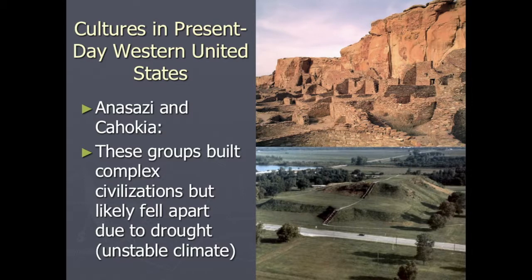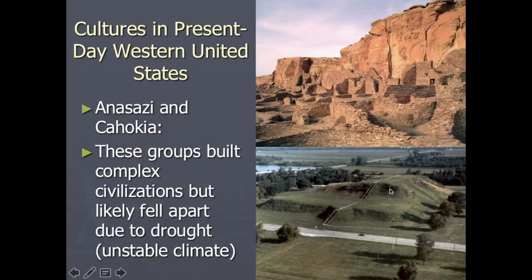The same thing happened with the Cahokia mound builders depicted at the bottom. The Anasazi were largely in the New Mexico area, and the mound builders were in southern Illinois, pretty much right across the Mississippi River from St. Louis. In fact, if you stood on top of this mound, you would actually be able to see the St. Louis Arch from across the Mississippi River. These mounds were built kind of like the Egyptian pyramids as places of burial for high-ranking members of their societies.